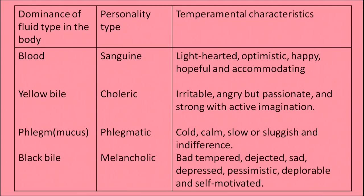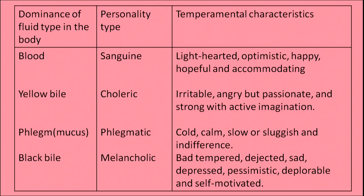For example, when blood is the dominant fluid in the body, the personality type is sanguine. The characteristics are: they are light-hearted, optimistic, happy, hopeful and accommodating. The second is yellow bile — they are choleric: irritable and angry but passionate and strong with an active imagination. Next is phlegm — they are phlegmatic: cold, calm, slow or sluggish and indifferent.